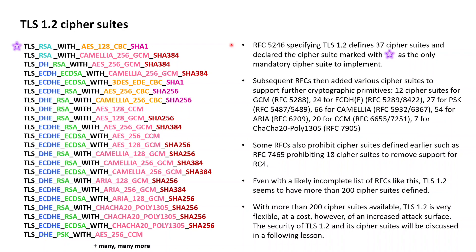It uses AES behind CBC with 128-bit keys for the encryption of the application data, and uses SHA-1 once for HMAC to authenticate the application data, but also uses SHA-1 within the pseudorandom function PRF for the derivation of the cryptographic key material used.